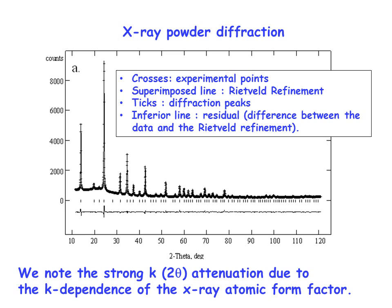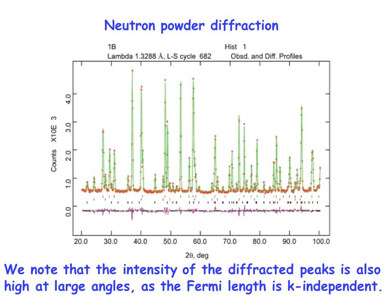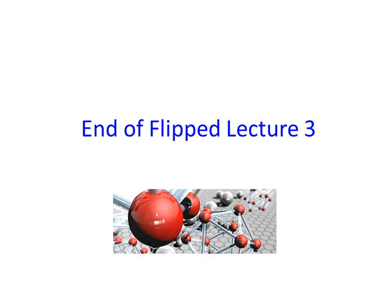The peaks decrease rapidly in intensity with 2θ due to the K-dependence of the X-ray atomic form factor. In neutron powder diffraction, a similar diagram shows multiple rows of tick marks because the fitting is multi-phase — here there are three different phases. The intensity in the high-angle region is notably elevated compared to X-rays, due to the independence of the Fermi scattering length from K, which is the scattering form factor for neutrons. That was all for our third FLIP lecture.